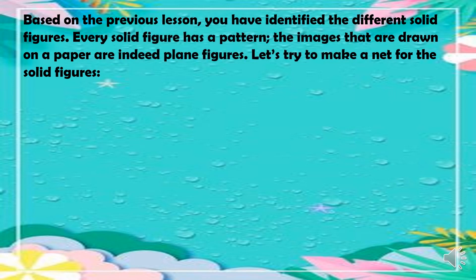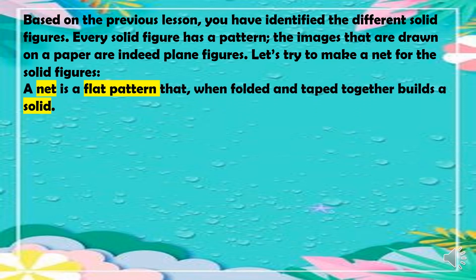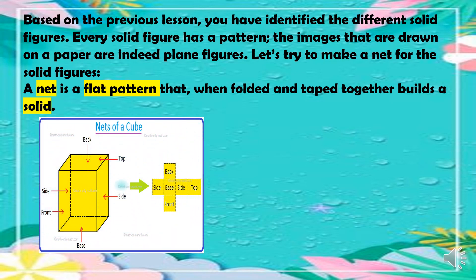Based on the previous lesson, you have identified the different solid figures. Every solid figure has a pattern. The images that are drawn on paper are indeed plain figures. Let's try to make a net for the solid figures. A net is a flat pattern that, when folded and taped together, builds a solid. For example, we have the net of a cube — if you're making a cube, you can follow these steps using this net.